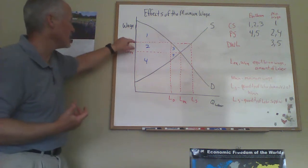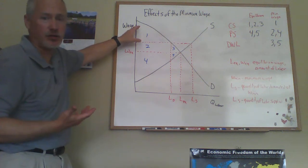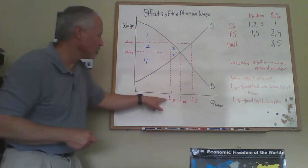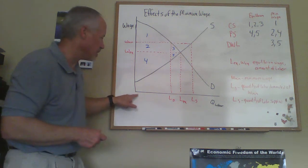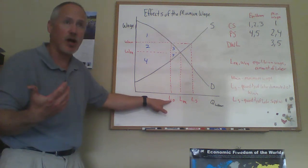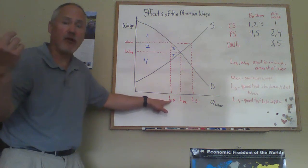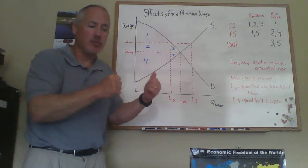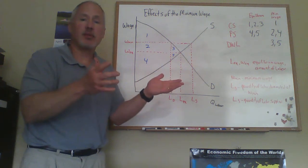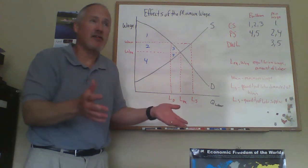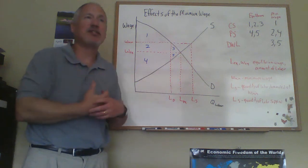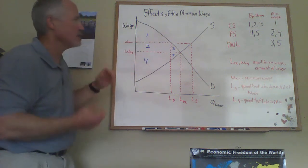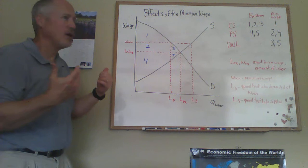With a minimum wage in place, there is a transfer from firms — consumer surplus — to workers. The workers who manage to keep their jobs between zero and LD, the workers who keep their jobs at the minimum wage, are now receiving a higher wage and are better off. If they were working before for $10 an hour and the minimum wage gets boosted to $15 an hour, everyone who still works at the minimum wage and the same number of hours is getting paid $5 more per hour. The disutility of working is the same, but they're getting more pay — this represents the transfer from firms to workers.